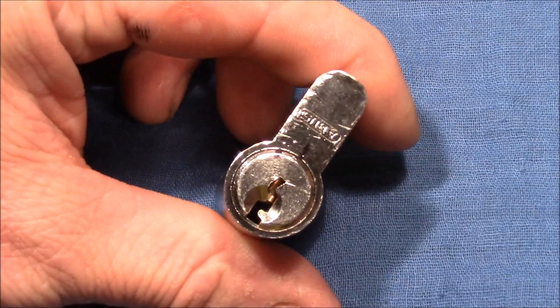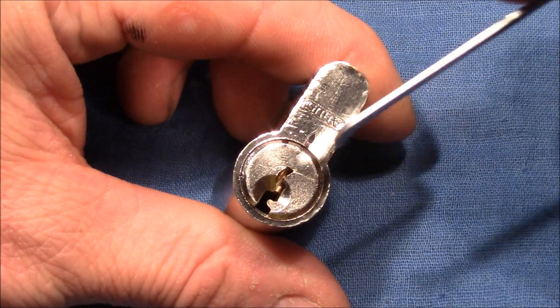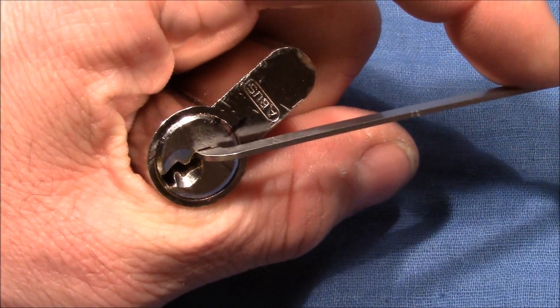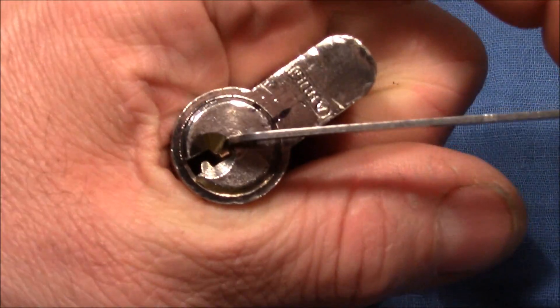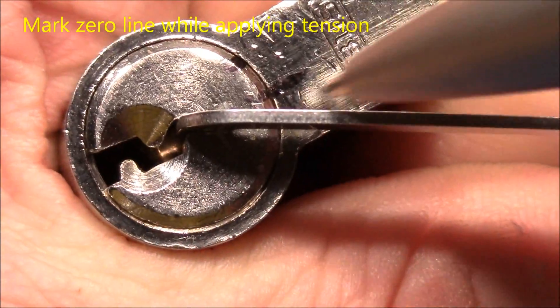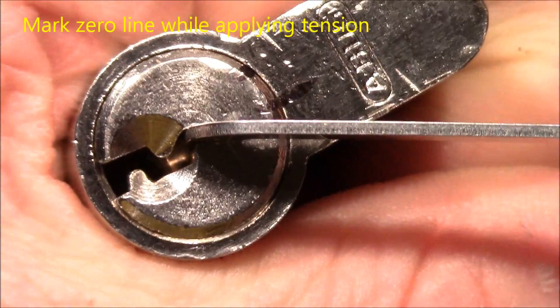Now when you pick it, you apply tension to the plug and while applying tension you mark your zero position like I've done here. That's the first black line. It goes from the plug to the housing.